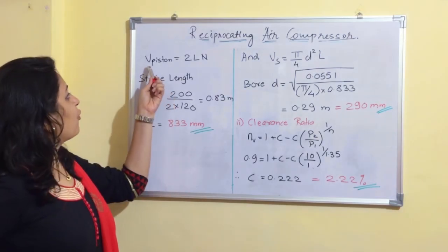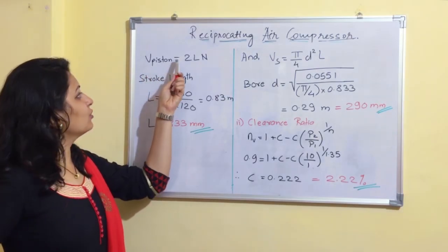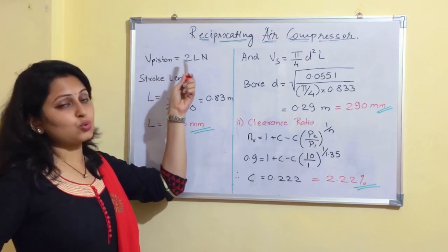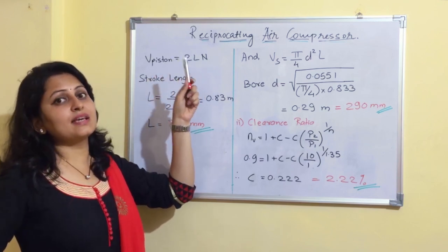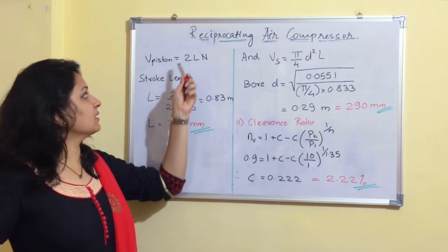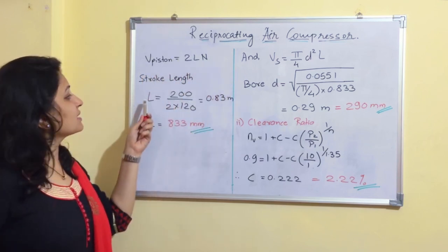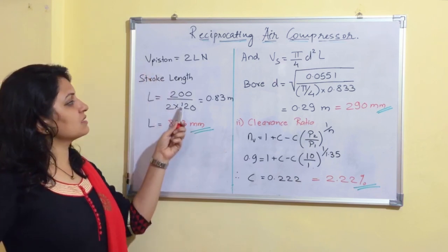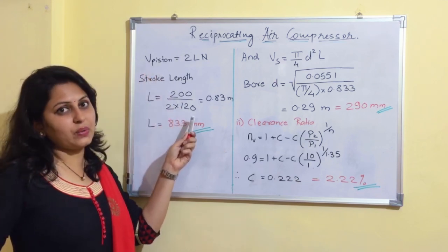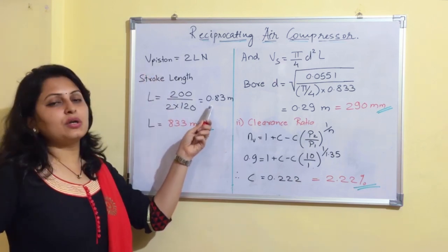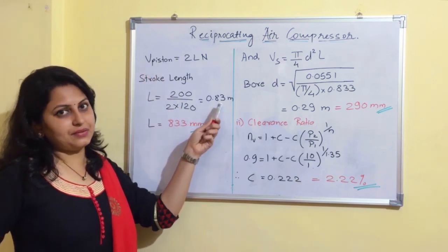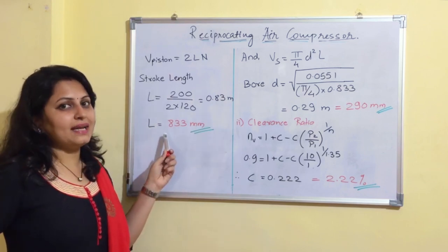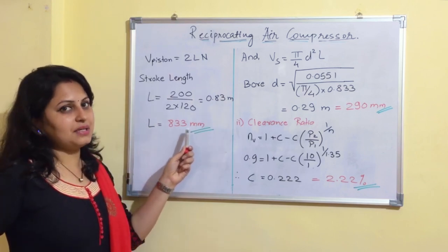The formula for piston speed is 2LN for double acting (and LN for single acting). Substituting the piston speed of 200 m/min and N = 120 rpm, we get stroke length L = 0.83 m, which equals 833 mm.